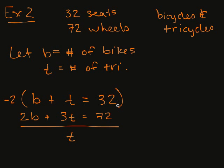What do we get here? I get negative two times 32. So that's negative 64. So 72 minus 64 gets me eight. So I have eight tricycles.